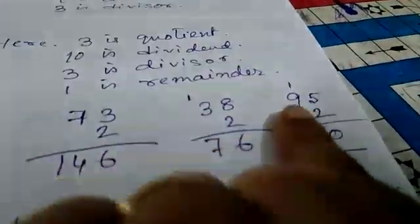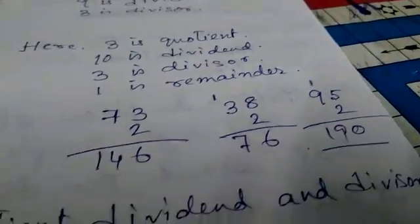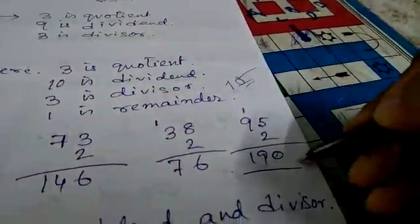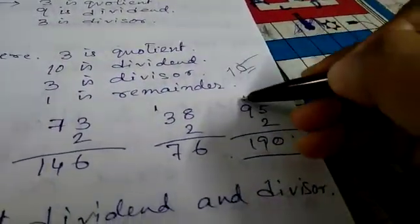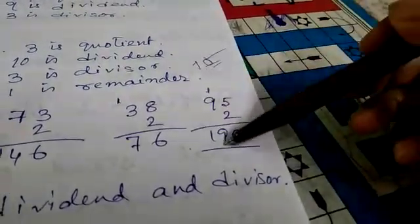5×2=10. 5×2=10, write 0. 0 means 10. Always we will take 10. Right side we will write, and the left side we will keep it as carried over. 9×2=18, plus 1 equals 19.